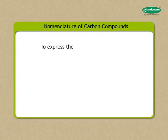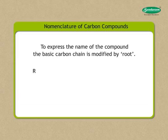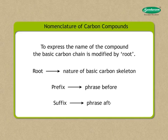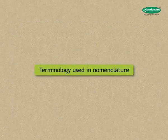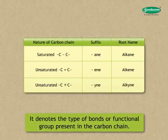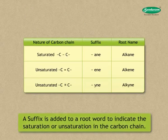To express the name of a compound, the basic carbon chain is modified by a root. A root indicates the nature of the basic carbon skeleton. A prefix indicates a phrase before, and a suffix indicates a phrase after. The root indicates the nature and the number of carbon atoms in the basic carbon skeleton.